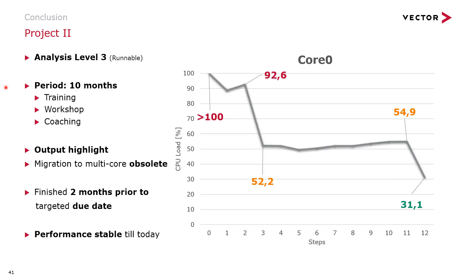The second project was larger in scope. We applied level 3 analysis — watching the runnable level — over a period of 10 months, including a training phase, workshop phase, and coaching phase. Again, starting from over 100% CPU load, we reduced it down to 31%. As a highlight, migration to multi-core became obsolete because 31% on a single core was perfectly fine. We finished this project 2 months before the targeted due date, and the ECU performance remains stable to this day.